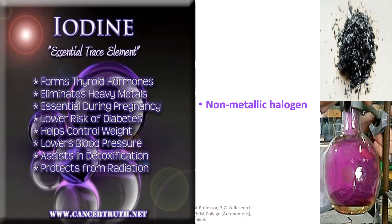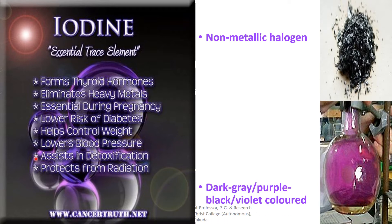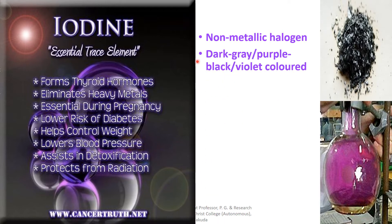Iodine is a non-metallic halogen. It is a dark grey, purple-black or violet coloured lustrous solid element.